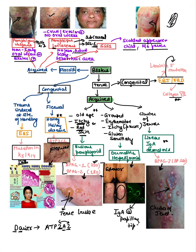Some may confuse this with dermatitis herpetiformis, but in dermatitis herpetiformis the lesions are grouped. Also, in dermatitis herpetiformis, IgA is deposited in a granular pattern at the tips — not in a linear deposit like in bullous pemphigoid.